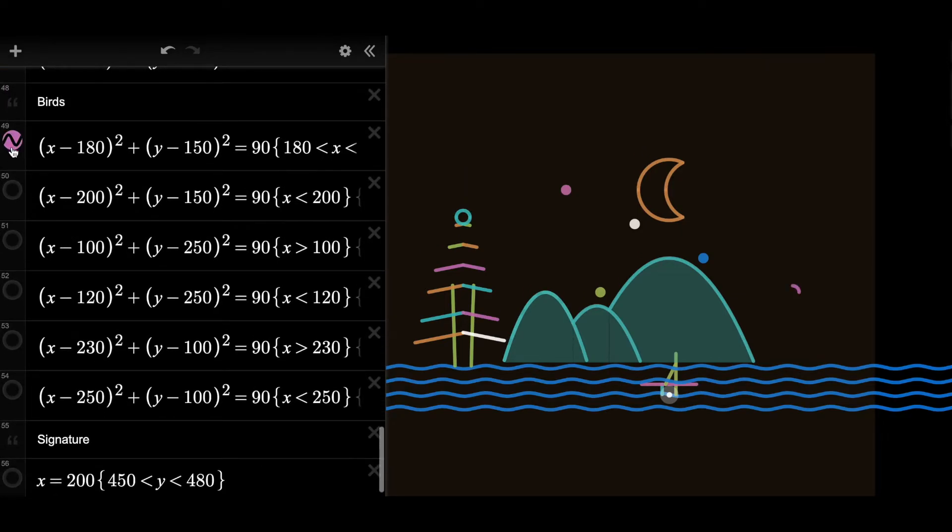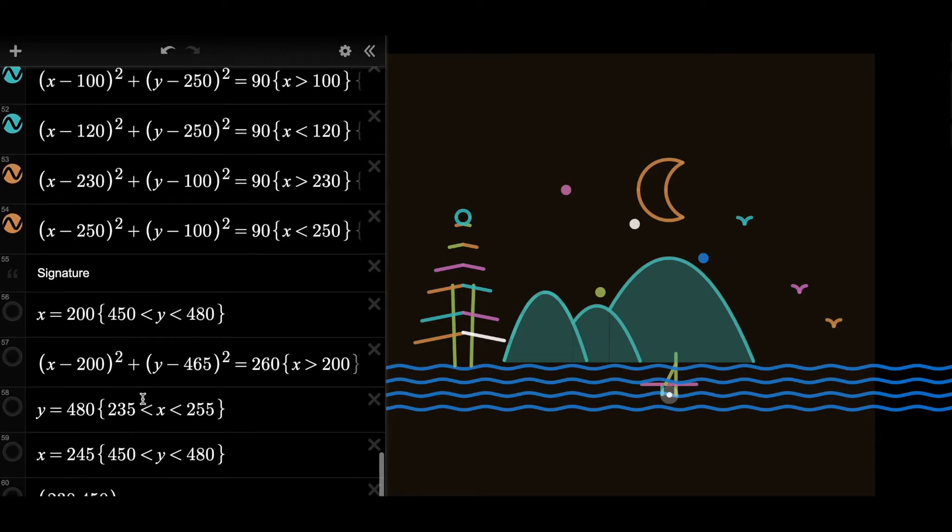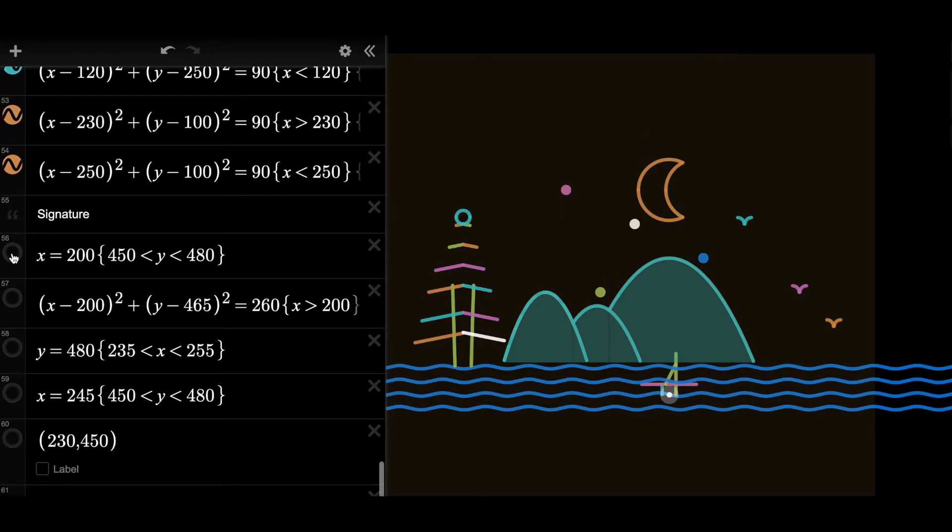For birds, birds are created using portions of circles, as you can see. And lastly, my signature. I use lines, a few lines, half of a circle, and a dot.